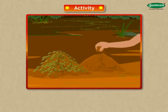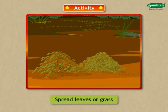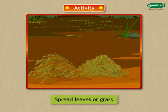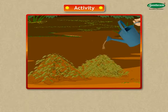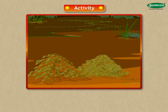Now spread soil again on the uncovered side of the hill. Spread leaves or grass over this hill to cover it entirely. Again, water the hill with a watering can. Does the soil from the hill that you have now covered with leaves still flow away as easily as it did before? No — the soil from the hill covered with leaves does not flow away as easily as it did before.